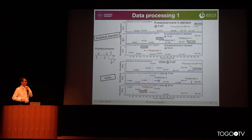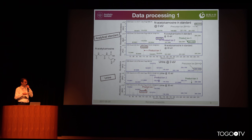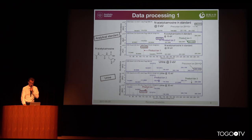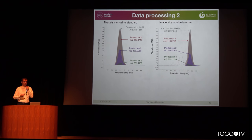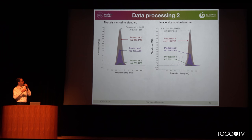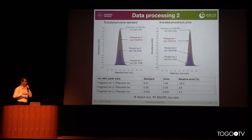If we observe the similar retention time in urine, we can again see the precursor ion, as well as the product ions at rather small intensity. As you can see, there are also other molecules eluting at the same retention time. However, when we extract ion chromatograms from the mass spec data, here we see the anserine/carnosine standard with the precursor ion and three ion chromatograms, and the same is done for the urine.